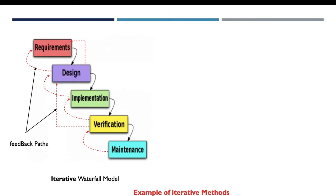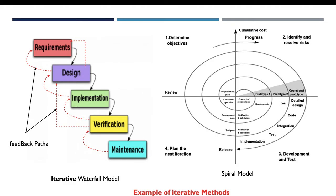As an example of iterative methods, we find the iterative waterfall model. This model is an enhancement of the classic waterfall model — the author added feedback paths (shown as red dotted lines). These feedback paths help the programmer to identify errors and correct them. For example, if we are at the verification phase and identify a design error, we come back to that phase, make the necessary changes, and those changes are then reflected in the implementation phase.